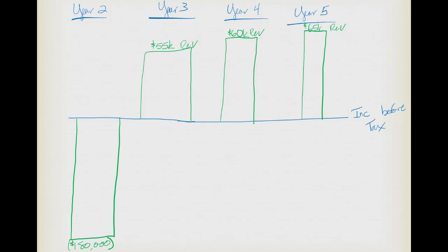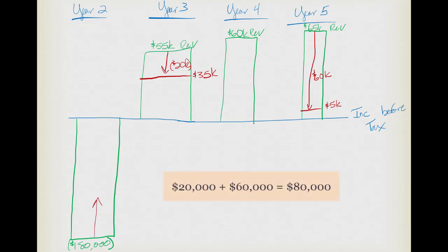We're not done yet because we have one other difference — expenses. In year three we'll have an additional expense of $20,000, in year four there's no expense difference, and in year five the expense difference was $60,000. That brings the year five net down to $5,000. For this year, those future higher expenses of $20,000 + $60,000 = $80,000 means expenses must be less now, so I go up $80,000 for a net effect of negative $100,000.